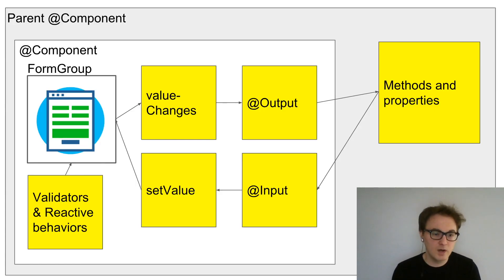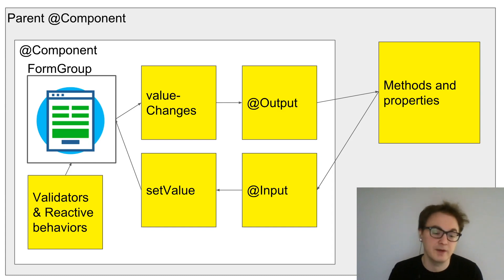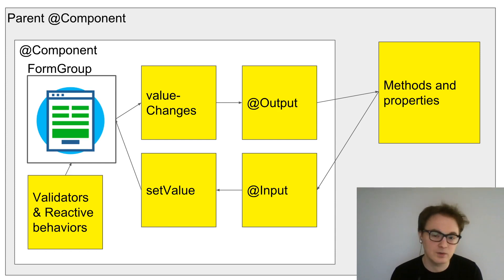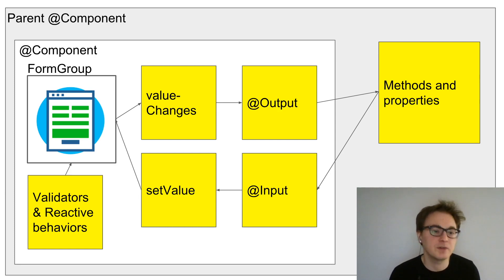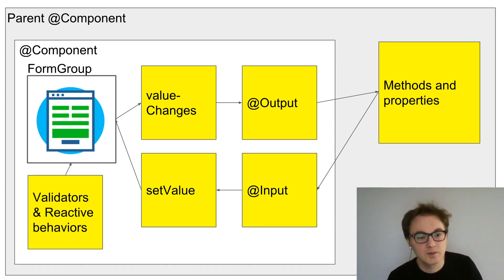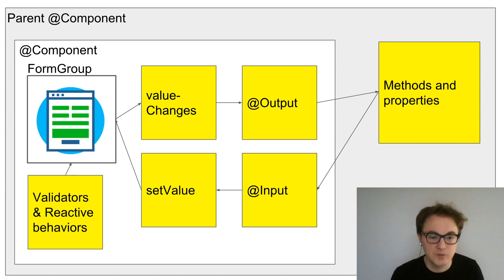The result of this for one component looks something like this — the yellow boxes are code that we have to write. We have our value changes observable subscriptions going through an @Output in this example, though it would be a similar idea for shared services or NgRx store. That goes to methods and properties on the parent component, and then changes are sent back into the component via an @Input, where we call setValue on the form group or form controls. Validators and reactive behaviors also hang off the form group.